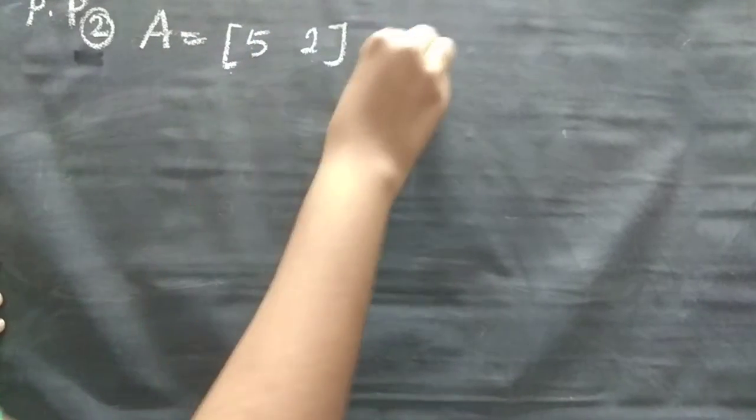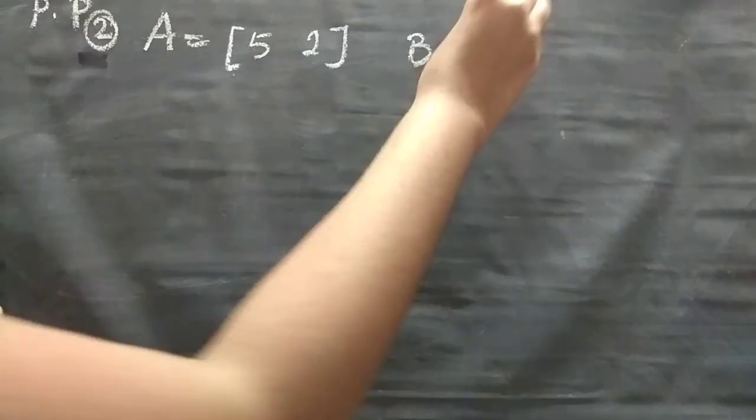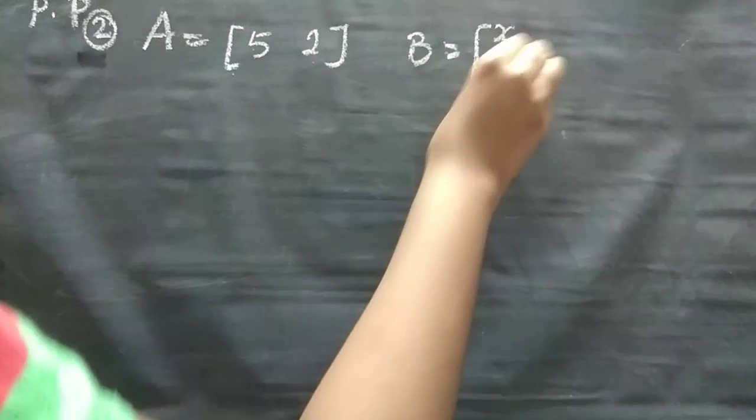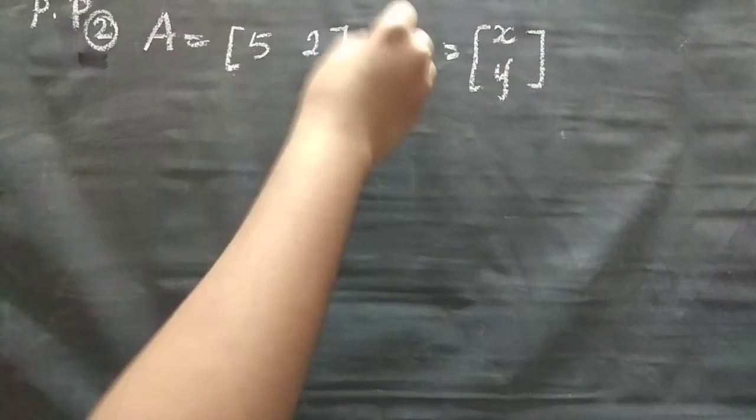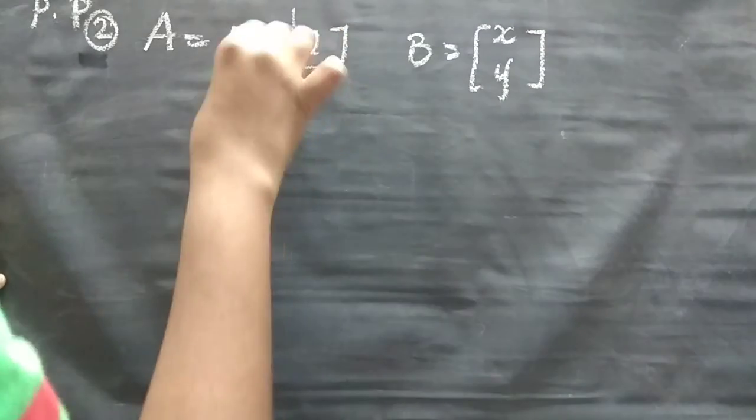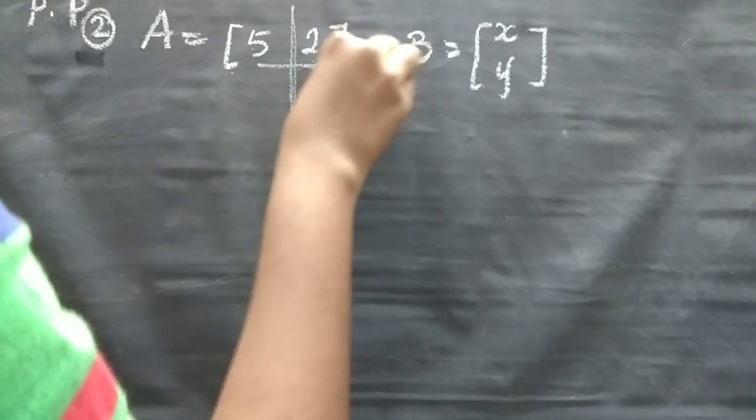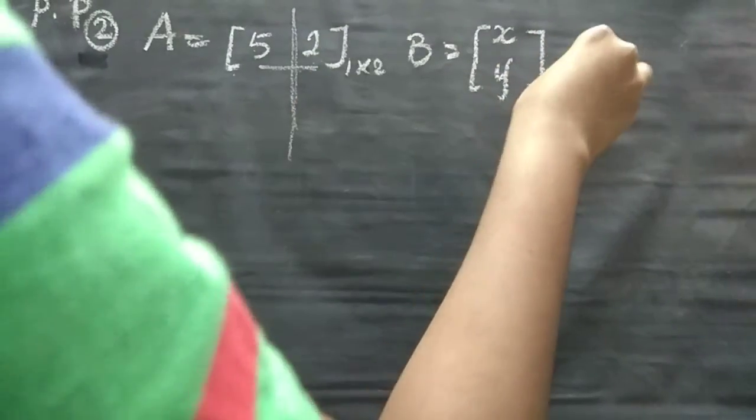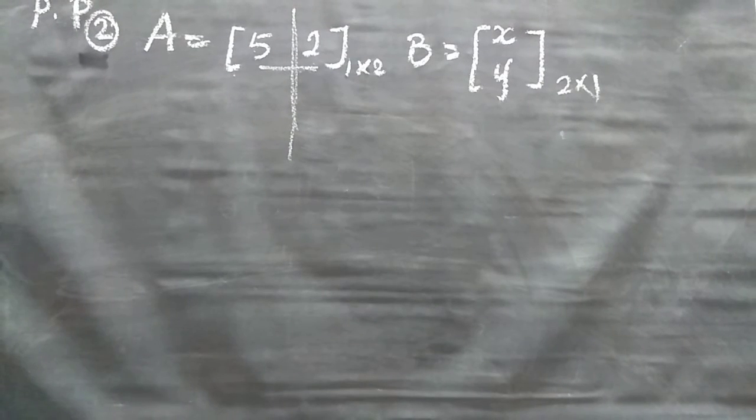Now we will see the next question. Pearl package second question is they gave us two matrices. A is equal to [5, 2] and B equal to [X, Y] like this. So this is how it looks like. This is first columns, then rows. So this is 1 cross 2. This is 2 cross 1. Understood?